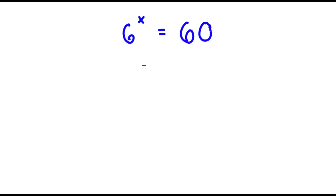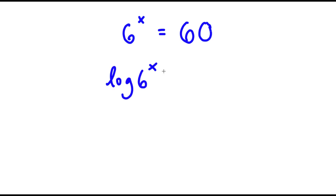In this problem, I have 6 to the power of x is equal to 60. To solve this, I'm going to first start by taking the log on both sides. So I have log 6 to the power of x is equal to log 60.